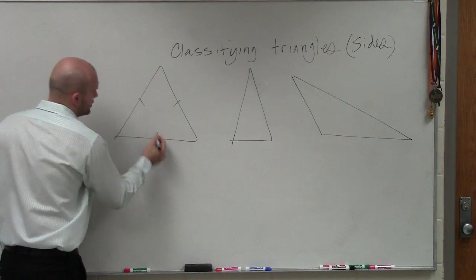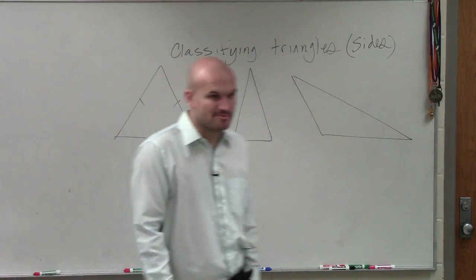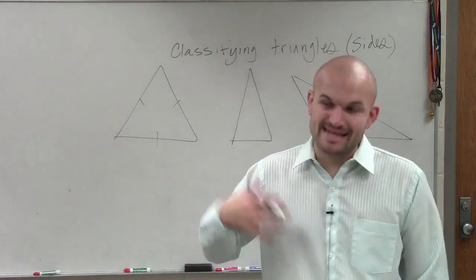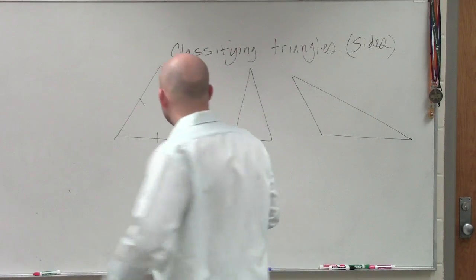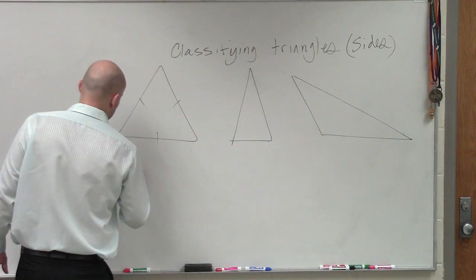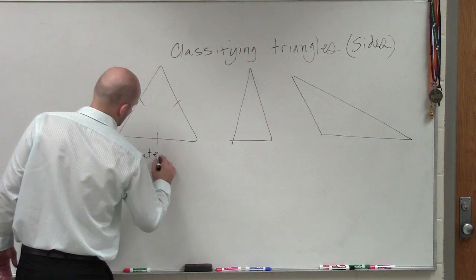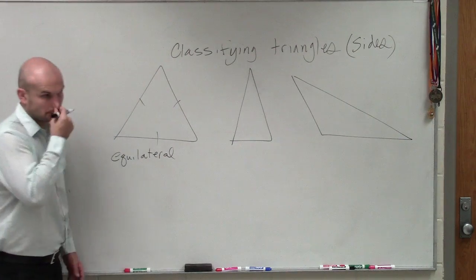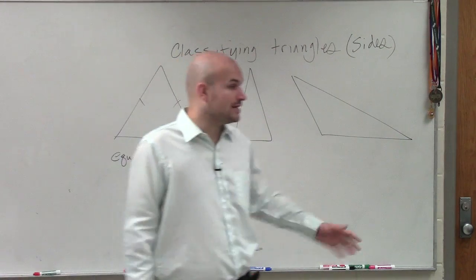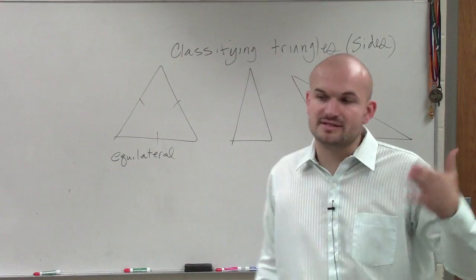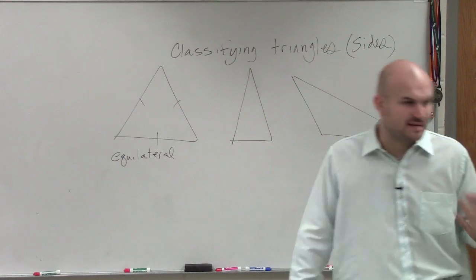When we have a triangle that has three equal measurements for each of the sides, three equal lengths, we call this an equilateral triangle. That tells us that each of the sides are equal in measure.